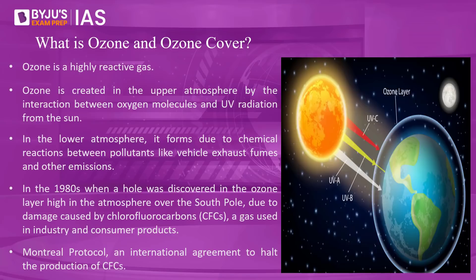Ozone is a highly reactive gas comprising three molecules of oxygen. It is created in the upper atmosphere by the interaction between oxygen molecules and ultraviolet radiation from the sun — you can see here, this is the ozone layer. In the lower atmosphere, it forms due to chemical reactions between pollutants such as vehicle exhaust fumes and other emissions. This entire concentration of ozone is called the ozone layer or ozone cover.